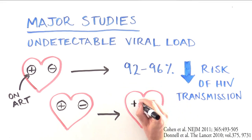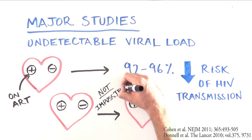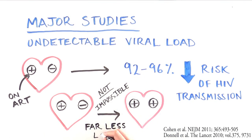It doesn't mean they can't transmit the virus, it just means that they are far less likely to do so. So undetectable viral load can also benefit HIV negative people.